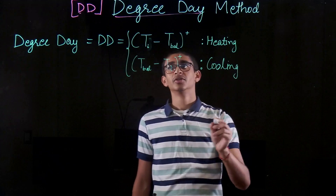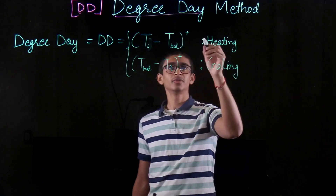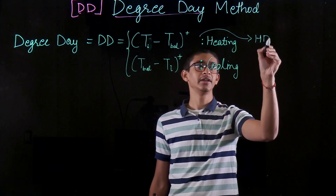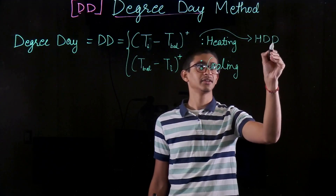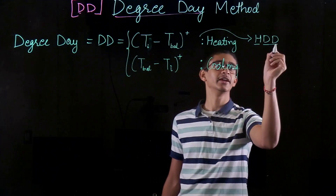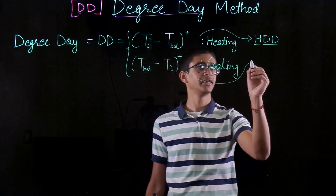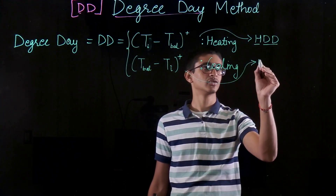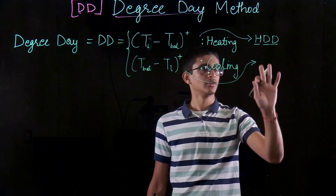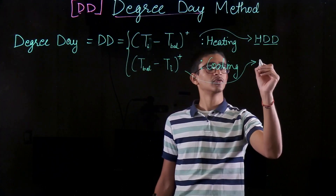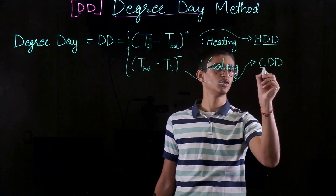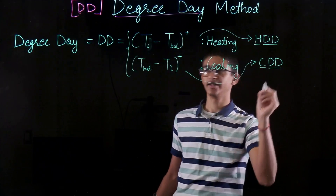In the case where T_balance is greater than T_i, the outside temperature is greater than the internal temperature, meaning my internal temperature is lower, and hence I am cooling my home. So the first formula indicates Heating Degree Days (HDD), while the second formula indicates Cooling Degree Days (CDD).